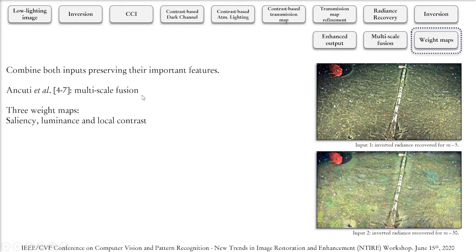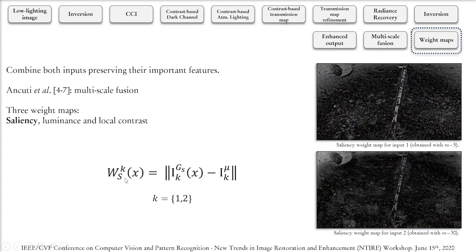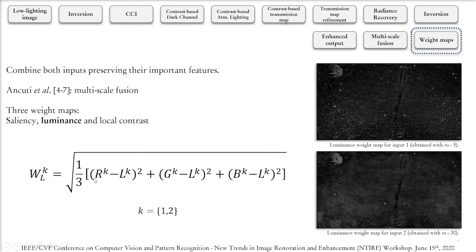We can achieve that using the multi-scale fusion process proposed by Ancuti et al. We calculate three weight maps that highlight the regions with high saliency, local contrast, and intensity changes. The first weight map is the saliency one that can be calculated by subtracting a Gaussian smooth version of one of the inputs K by its mean. The luminance weight map can be calculated by subtracting each of the R, G, and B channels of the image by their luminance image. The luminance image is composed in each position by the mean of the R, G, and B pixels. This weight map is going to highlight regions with higher saturation.